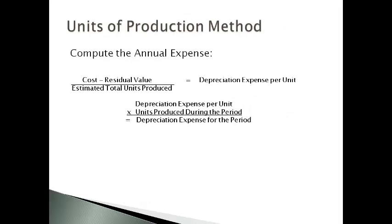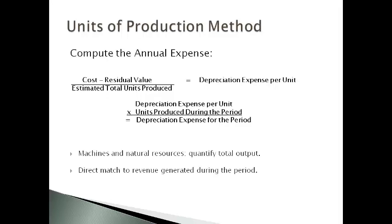The units of production method estimates and uses an average cost of producing one unit based on the total units the asset is expected to produce. The annual expense is computed as cost less residual value divided by the total estimated units to be produced. The estimated average expense per unit is then multiplied by the units produced to get the depreciation expense for the period. This method is used for machines and natural resources when it is relatively easy to reliably quantify estimated total output, giving a direct match to revenue generated during the period.